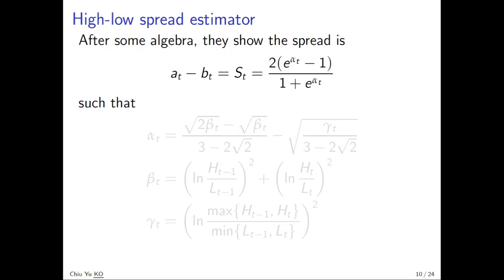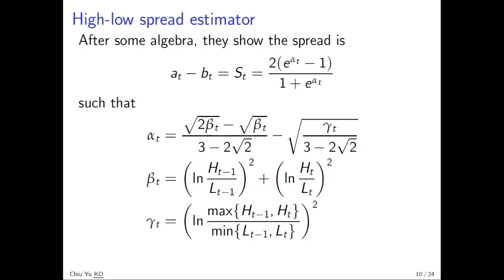After complicated algebra, they show the bid-ask spread, a_t - b_t equals S_t, which is a fraction where the denominator is 1 plus e^{α_t}, and the numerator is 2(e^{α_t} - 1). The question is what is alpha. Alpha is composed of two parts: one involves beta, and the second part is gamma. What is beta? Beta is pretty simple - it has two parts.